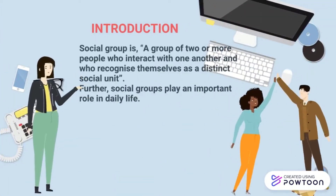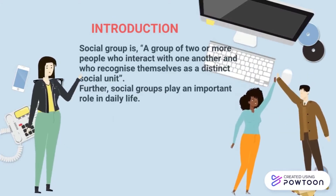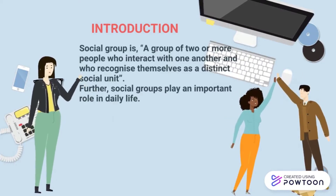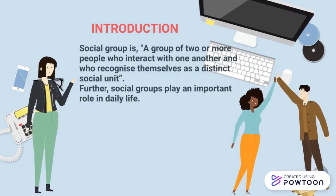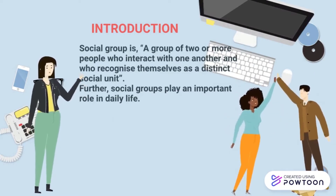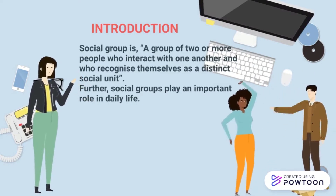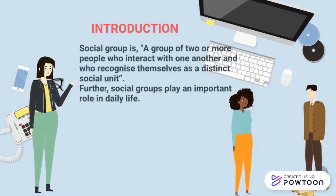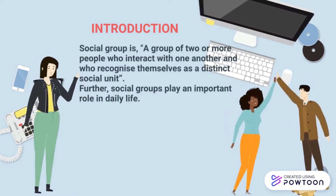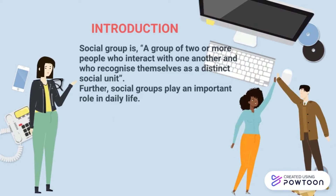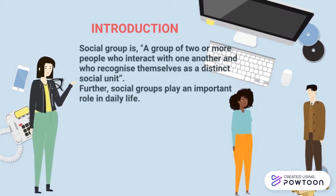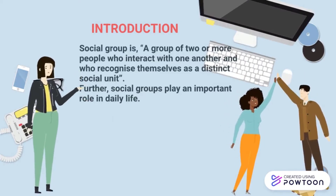Let's start with Social Group. A social group is a group of two or more people who interact with one another and who recognize themselves as a distinct social unit. Social groups play an important role in daily life. Any group of human beings who are in some form of interrelation can be called a social group. The term 'group' or 'social group' has been used to designate several forms of human aggregation, from just two members up to the entire population of a large nation-state.